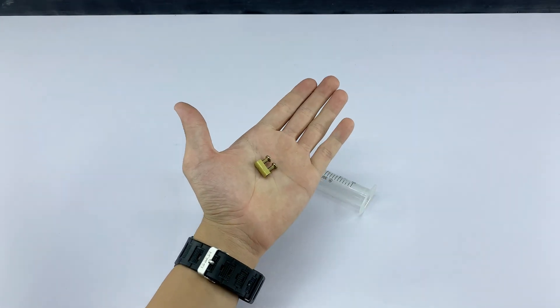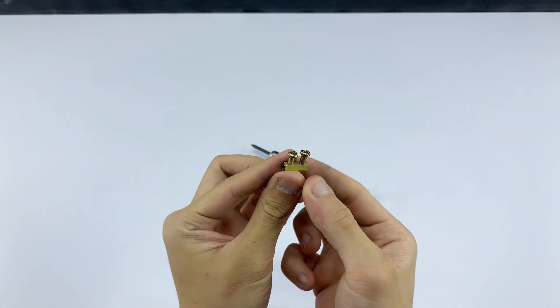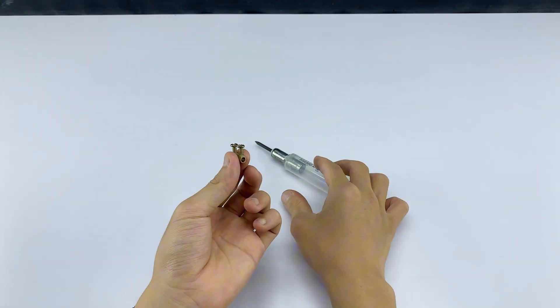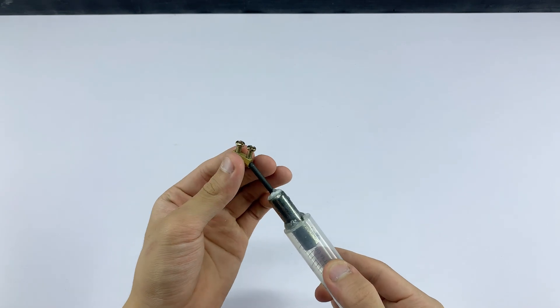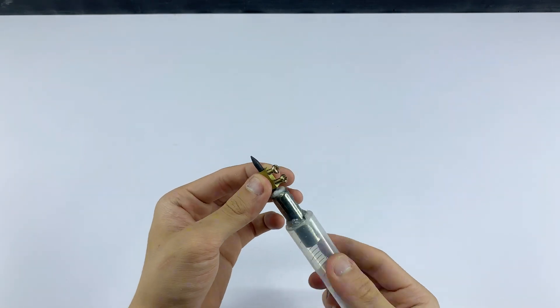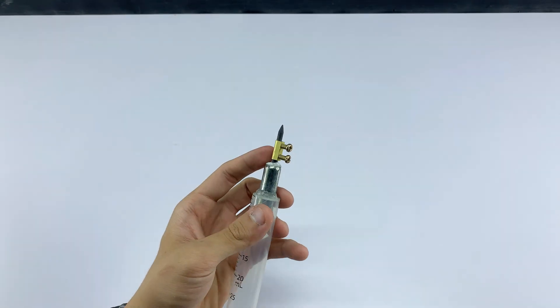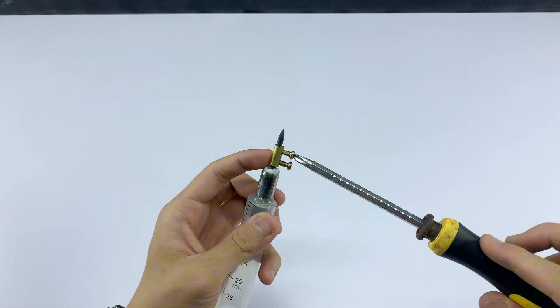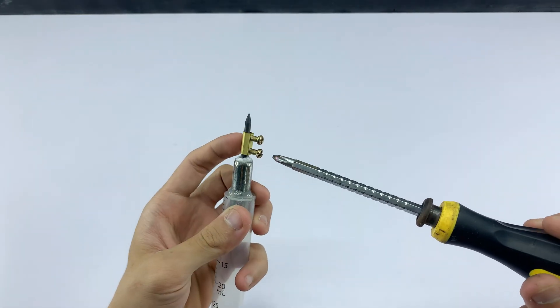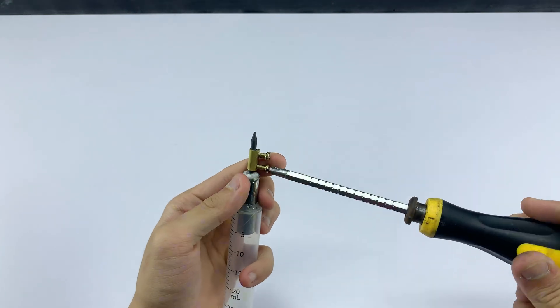I have a brass fitting. I carefully threaded it through the carbon rod. I am using a screwdriver to carefully tighten the screws. This will act as a secure attachment point.